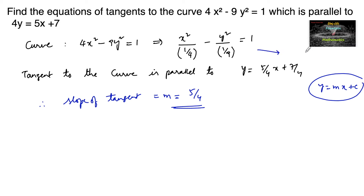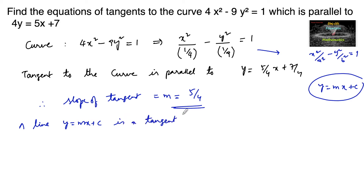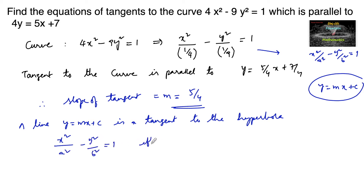The given curve is a hyperbola in the standard form x²/a² minus y²/b² = 1. We know that a line y = mx + c is a tangent to the hyperbola x²/a² minus y²/b² = 1 if and only if c² = a²m² minus b², or c = ±√(a²m² − b²).